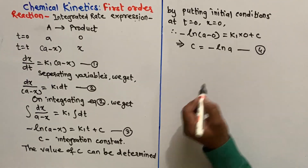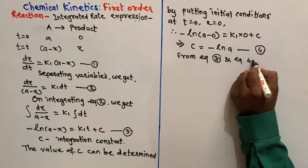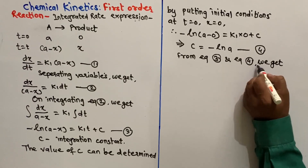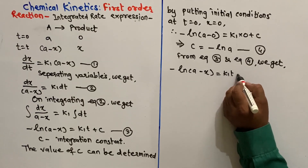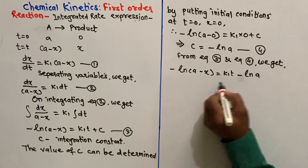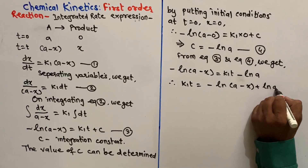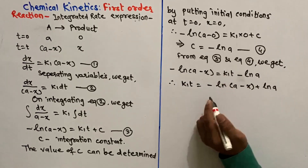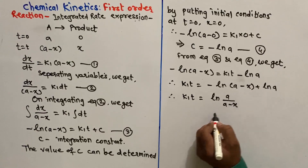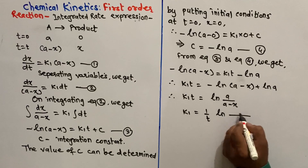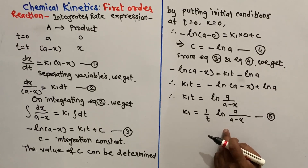Now, substitute the value of c from equation number 4 into equation number 3. From equations 3 and 4, we get: minus log of (A minus x) is equal to k1·t plus (minus log of A). Therefore, k1·t is equal to minus log of (A minus x) plus log of A, which gives k1·t equals log of A divided by (A minus x), or k1 equals (1/t) into log of [A / (A minus x)]. This is equation number 5 — the integrated rate expression for first-order reaction.